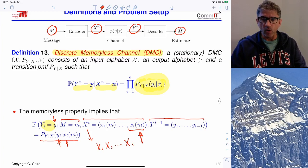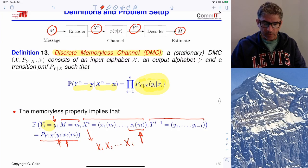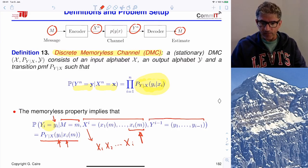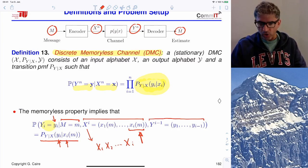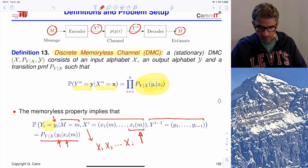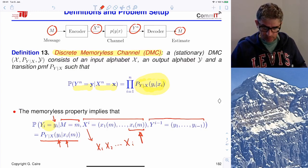In other words, if I condition on the input to the channel at time i, the output at time i is independent of everything else — including past received symbols, transmitted symbols up to the present, and the message. That is the defining property used in proving our theorems. There are also channels with memory where this property doesn't hold; we will see an example with the frequency-selective Gaussian additive noise channel later.